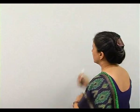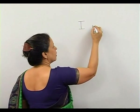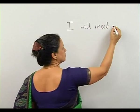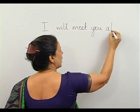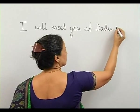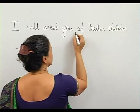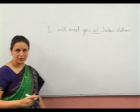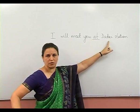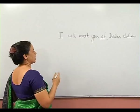Now, if I say: 'I will meet you at Dadar station.' We are using the preposition 'at' to denote place. That means we are talking about which place — at the station. So, 'at' is showing us place.